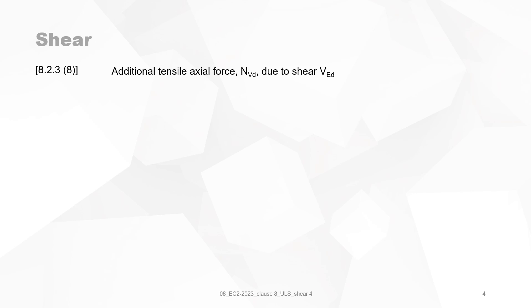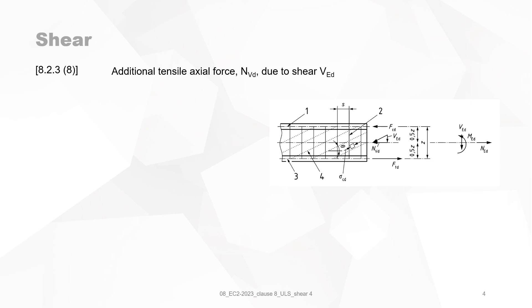Additional axial force NVD due to shear VED can be calculated as follows. Looking at the diagram of shear force actions, you will see that the tension cord of the tension cord is FTD. The compression in the compression cord is FCD. And the compression in the compression strut, when you take the horizontal component of it is NVD and the vertical component is VED. All those forces must be in equilibrium with the external forces applied on the section.